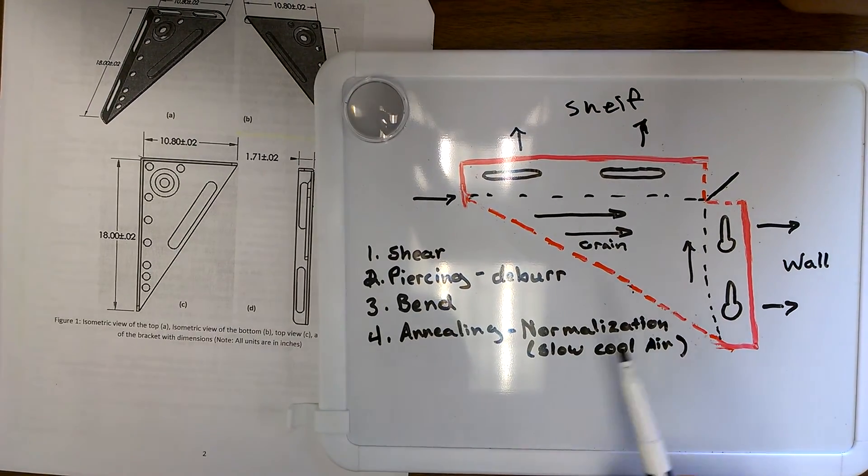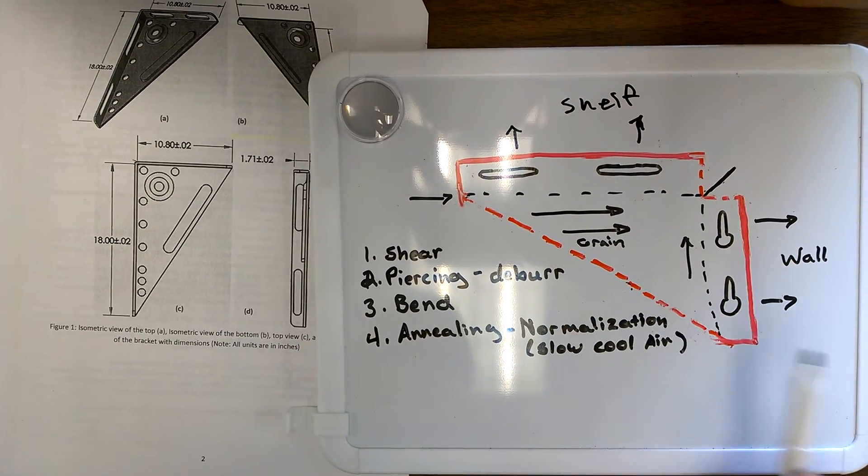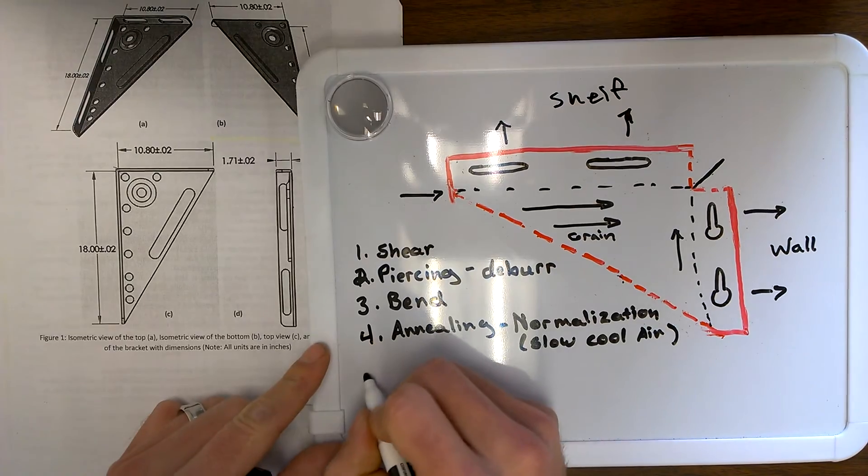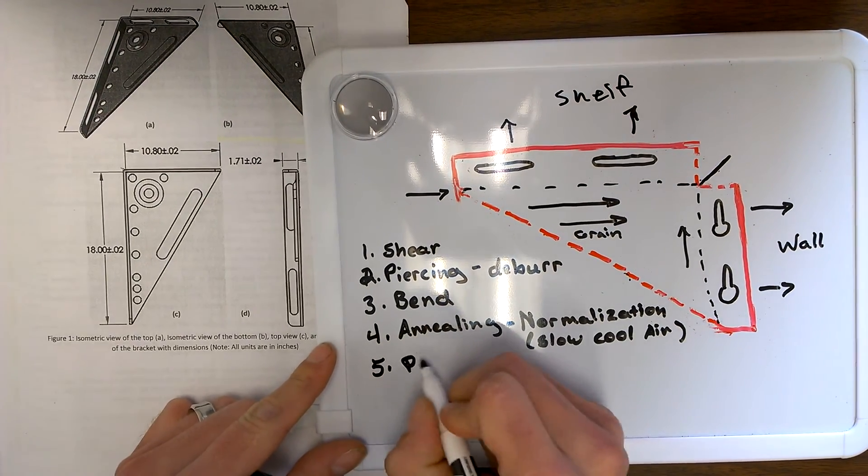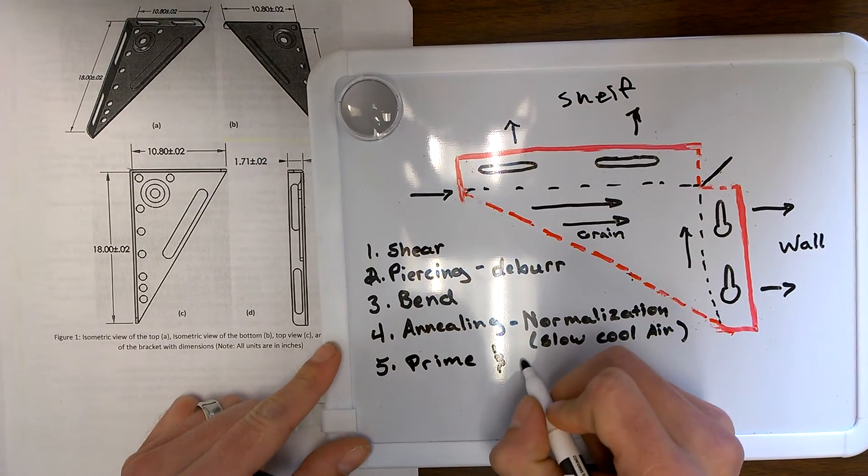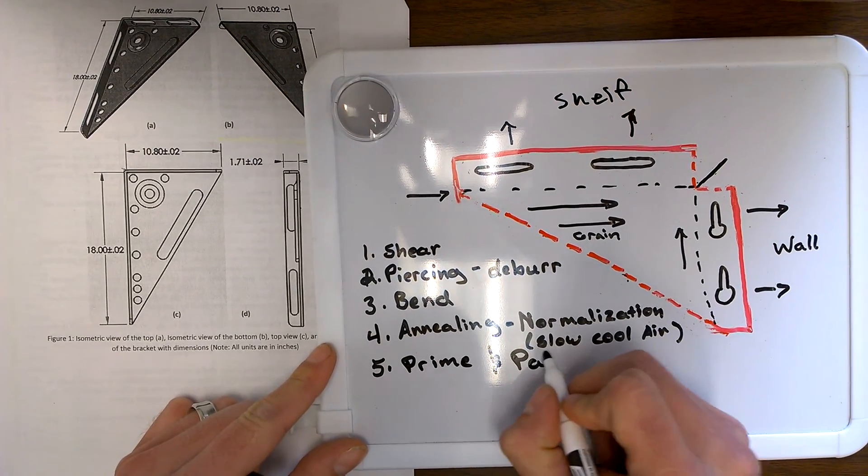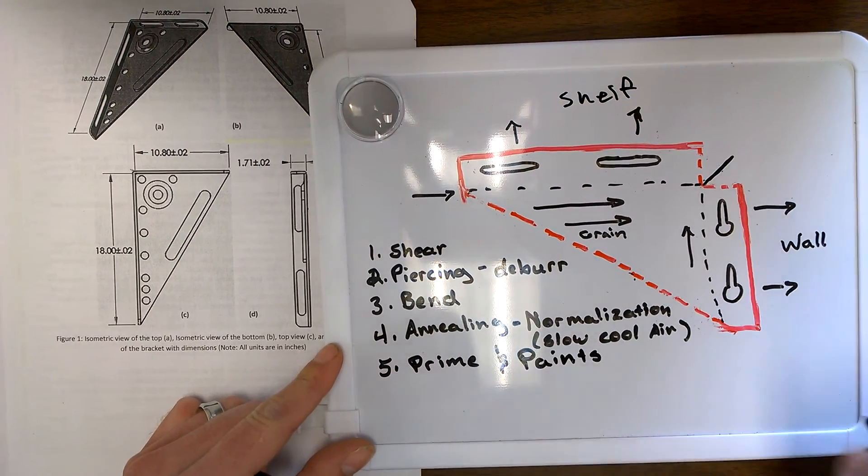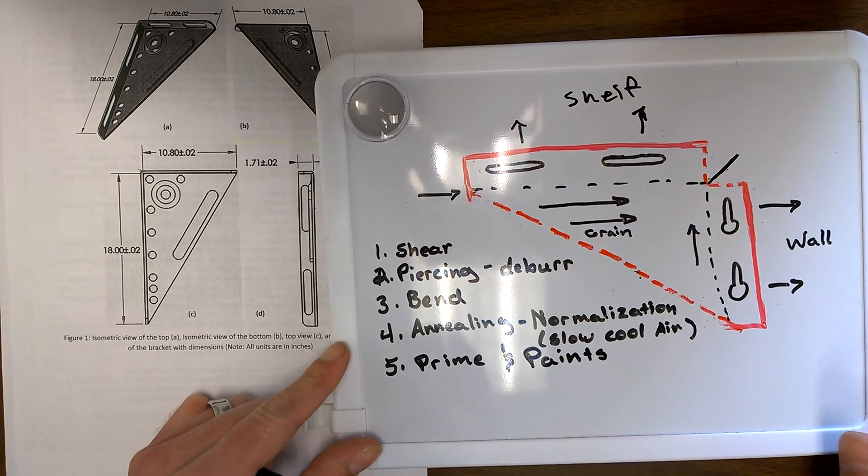And then after the annealing process we will want to primer and paint for corrosion resistance. And then you'll have your part. Thank you for your time.